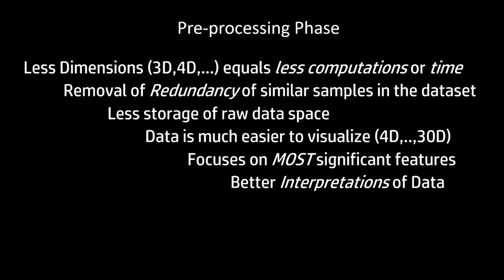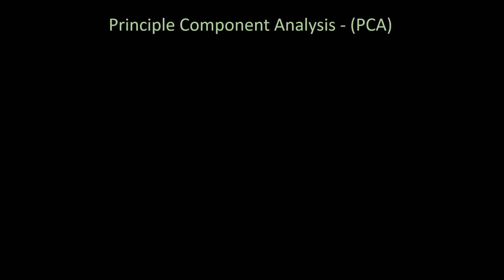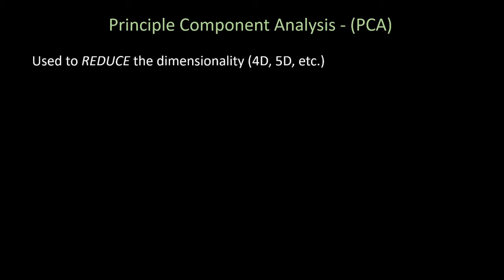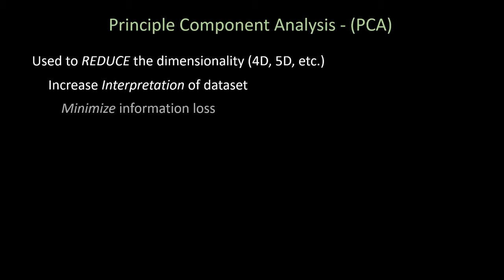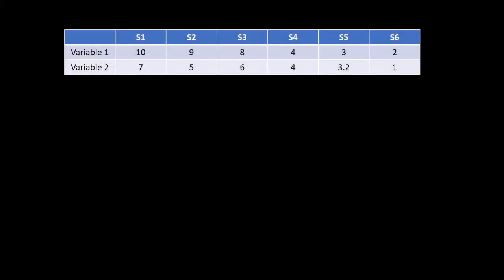We use principal component analysis — PCA — to reduce the dimensionality. This is what we're primarily going to use to try to get it down to 2D. This is how we increase our interpretation of the data set, and it's really good for minimizing information loss.